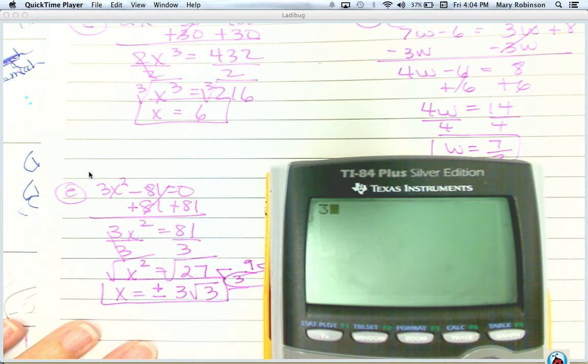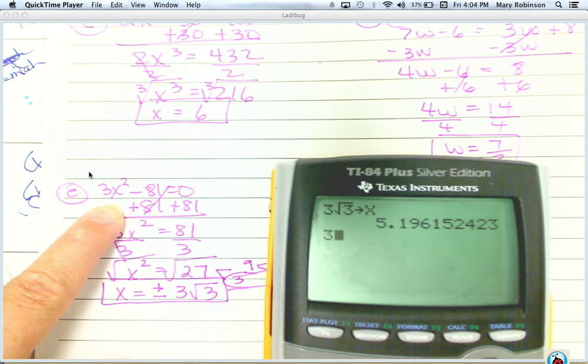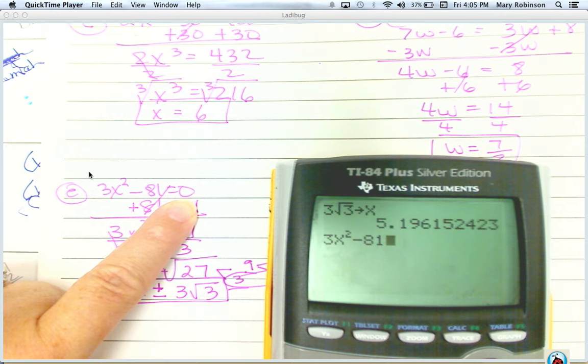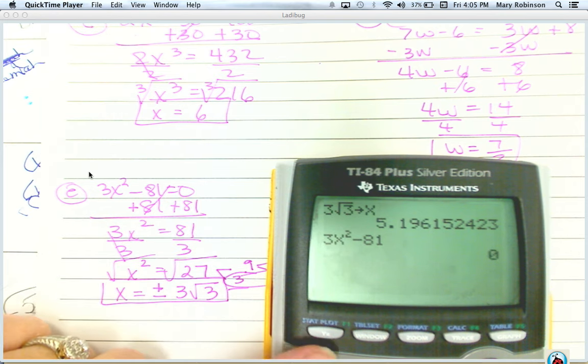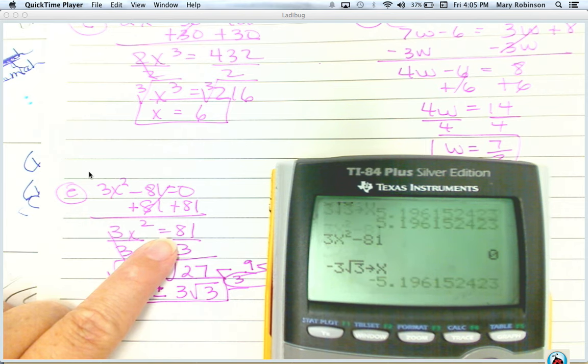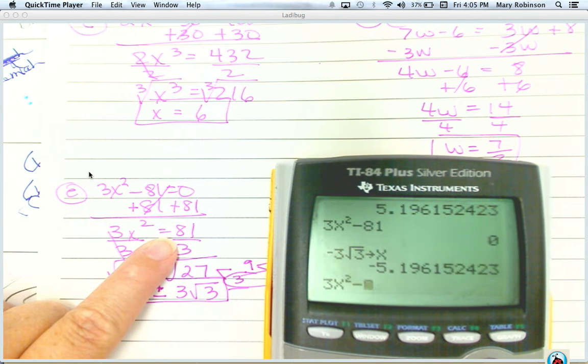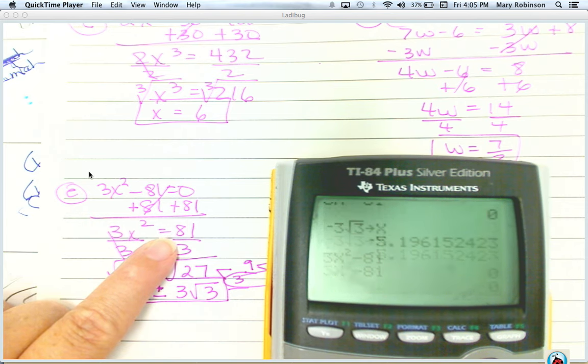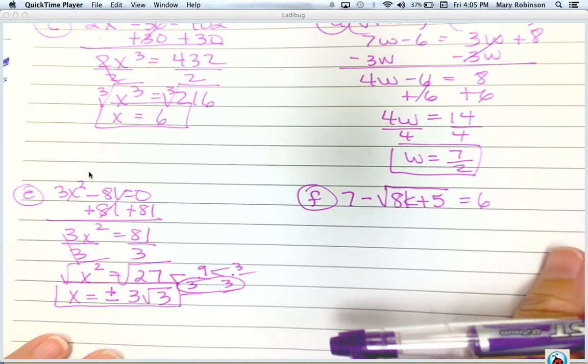So if I type in 3 square root of 3 and store that as x, then type in 3x squared minus 81. Hopefully, it'll come out to equal 0. And it does. If I take negative 3 square roots of 3 and store it as x, and then type in the problem, you also get 0. So both of these solutions are correct.